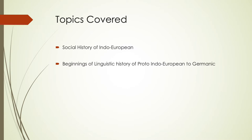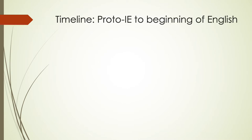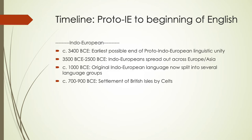Starting with the timeline from a previous lecture, Indo-European is seen as having been spoken from around 5000 BCE to about 3000 BCE, where there was a linguistic unity during that time. Around 3000, maybe a few hundred years before or after, Indo-Europeans began to spread out across Europe and Asia. Around 1000 BCE is when the original European language split into different language groups, no longer seen as Indo-European as a single language. Around 700 to 900 BCE is when the Celts made it to the British Isles and began settling those areas.